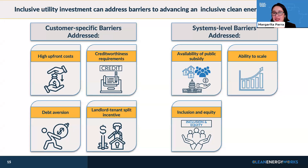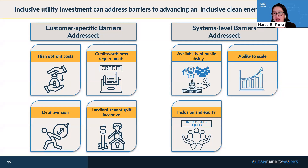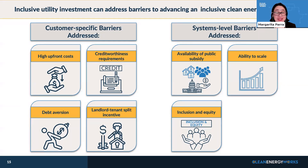Inclusive utility investments, with good policy design, can address both consumer barriers and systemic barriers to advancing an inclusive clean energy transition. They can help reduce the high upfront costs associated with clean energy upgrades, eliminate creditworthiness requirements, and help address the landlord-tenant split incentive problem in energy efficiency. On the systemic level, they can leverage public funds — which are generous but limited — and get to scale. And with good program design, we can ensure that inclusion and equity concerns are addressed.